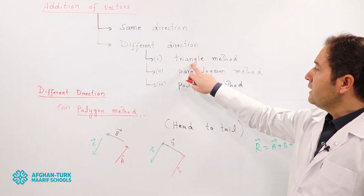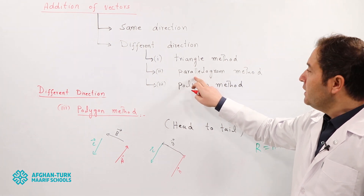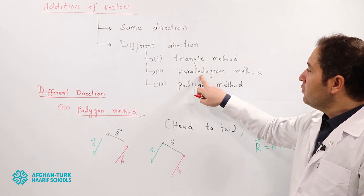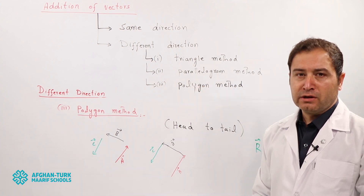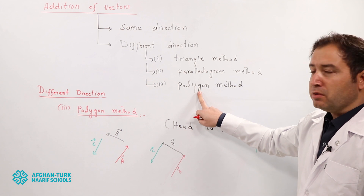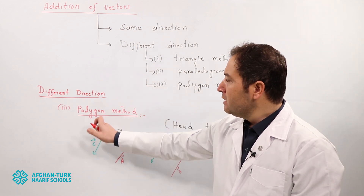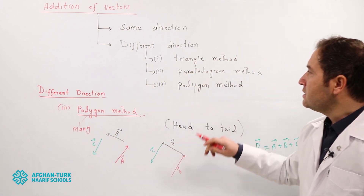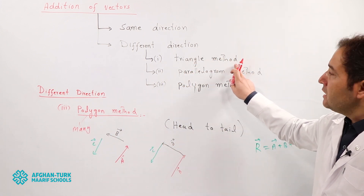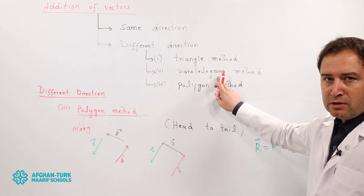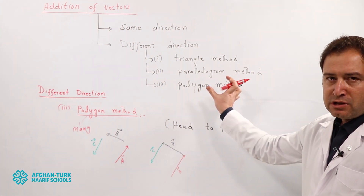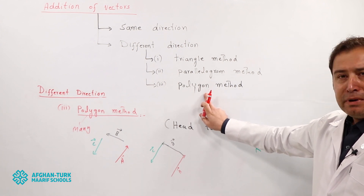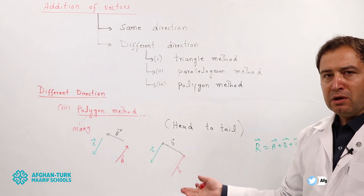In different direction, if we use the triangle method or the parallelogram method, we cannot add more than two vectors. So if we have more than two vectors, we use the polygon method. Polygon means 'many.' In the triangle method there are two sides, and in parallelogram the opposite sides are equal, but in polygon method the opposite sides may or may not be equal.